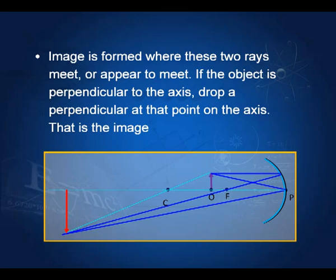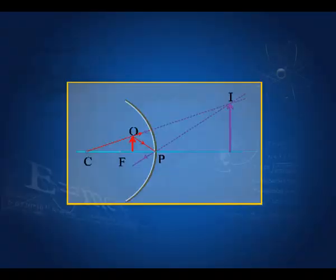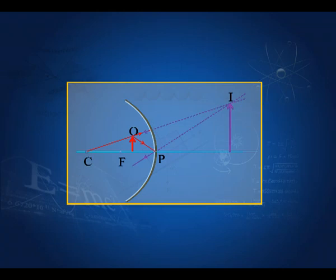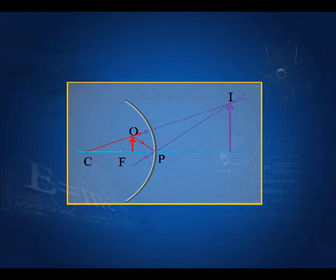Here I show the process when the rays do not actually meet but appear to meet. With the object close to the mirror, I draw a ray through C which remains undeviated, and a ray to the pole which reflects by the laws of reflection. These two rays appear to converge at point I, which is at the back of the mirror. So this is a virtual image. A virtual image is always erect and larger in size in the case of a concave mirror. This enlarged virtual image is why concave mirrors form part of the shaving kit for men and makeup kit for women.